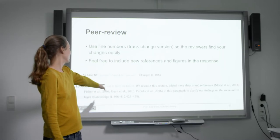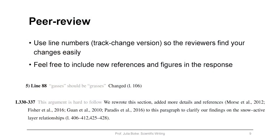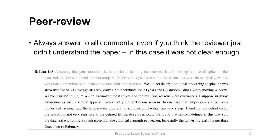For example, here somebody wrote 'this argument is hard to follow.' And then I would say we changed all this and added more references and these kind of things, what the reviewer might want to hear. You need to answer to all comments, even if you think the reviewer just didn't understand my point, he didn't read it well, it was all clear. Yeah, could be, but you still need to answer to all the points and explain it again. Because usually, if the reviewer didn't understand it, it was just not clear enough.